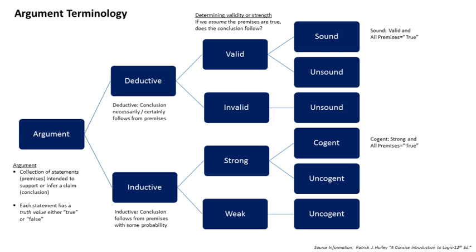World disclosing arguments are a group of philosophical arguments that are said to employ a disclosive approach, to reveal features of a wider ontological or cultural-linguistic understanding — a world in a specifically ontological sense — in order to clarify or transform the background of meaning and logical space on which an argument implicitly depends.